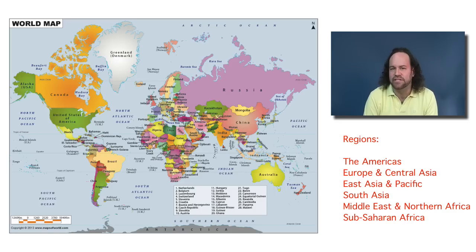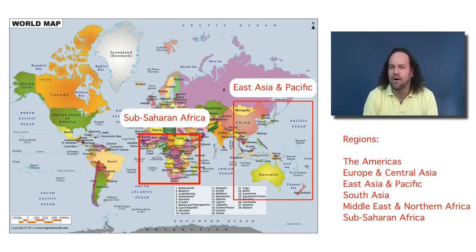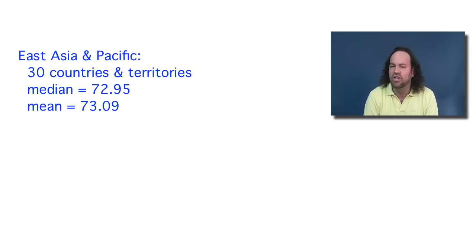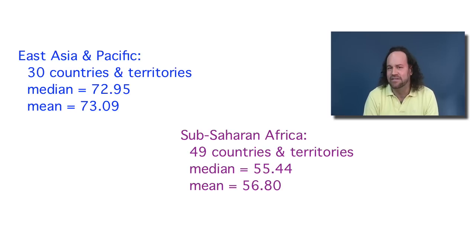Let's consider comparing East Asia and the Pacific with Sub-Saharan Africa. We might think that life expectancies tend to be larger in East Asia and the Pacific compared to Sub-Saharan Africa. In the East Asia and Pacific region, there are 30 countries, and their median and mean life expectancy are both approximately 73 years. In Sub-Saharan Africa, there are 49 different countries and territories, and their median and mean are both pretty close to 56 years. So right away, the center of the data is quite a bit higher in East Asia and the Pacific.